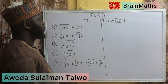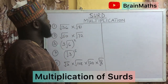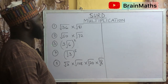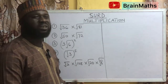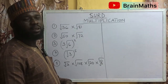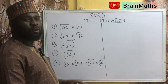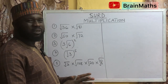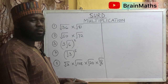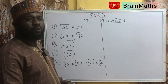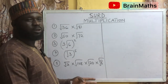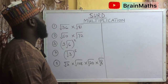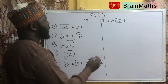Hello viewers. In this video we want to look at multiplication of surds. Multiplication of surds has to do with total multiplication. There is nothing like collection of like terms. When you have surds, you collect them and multiply them together, and there is nothing like what is common to which. So let's see how multiplication of surds is carried out.